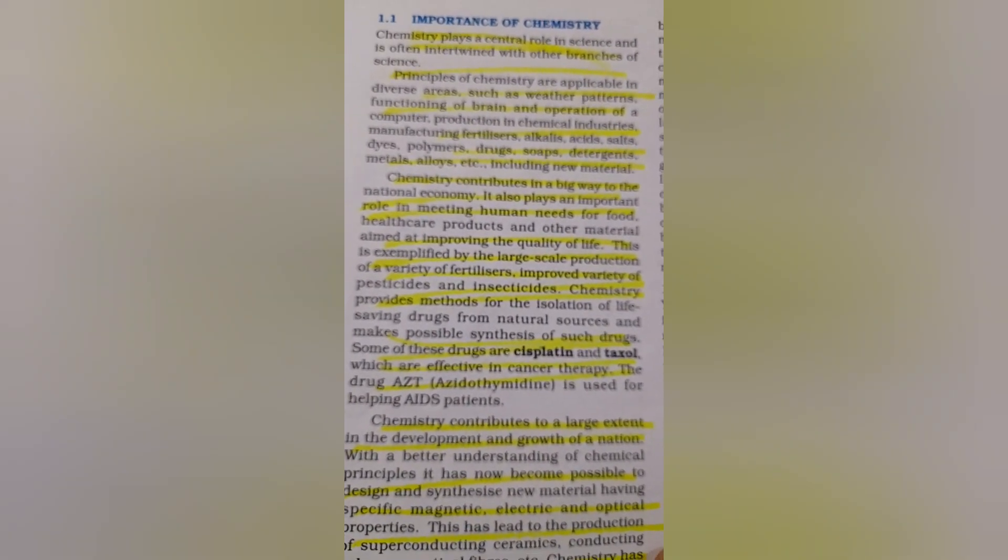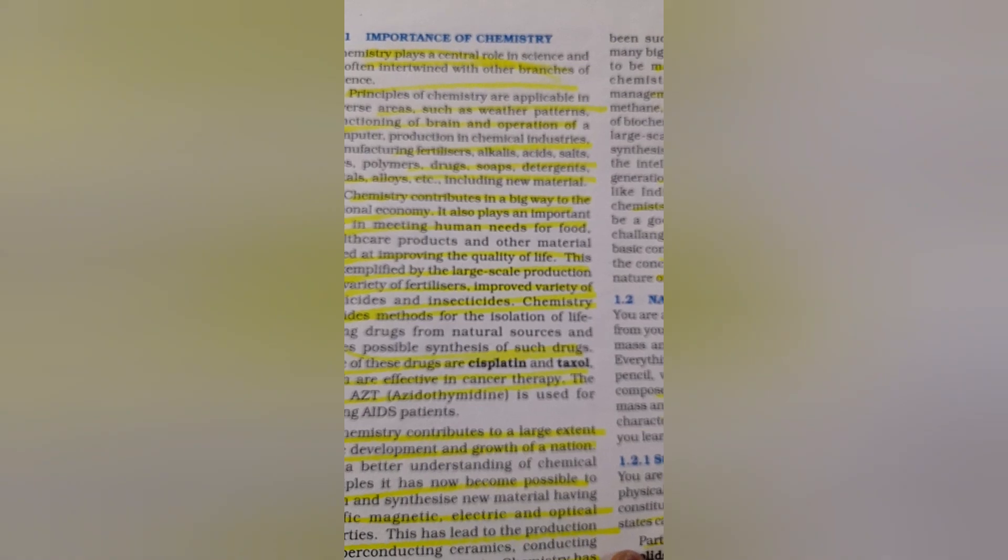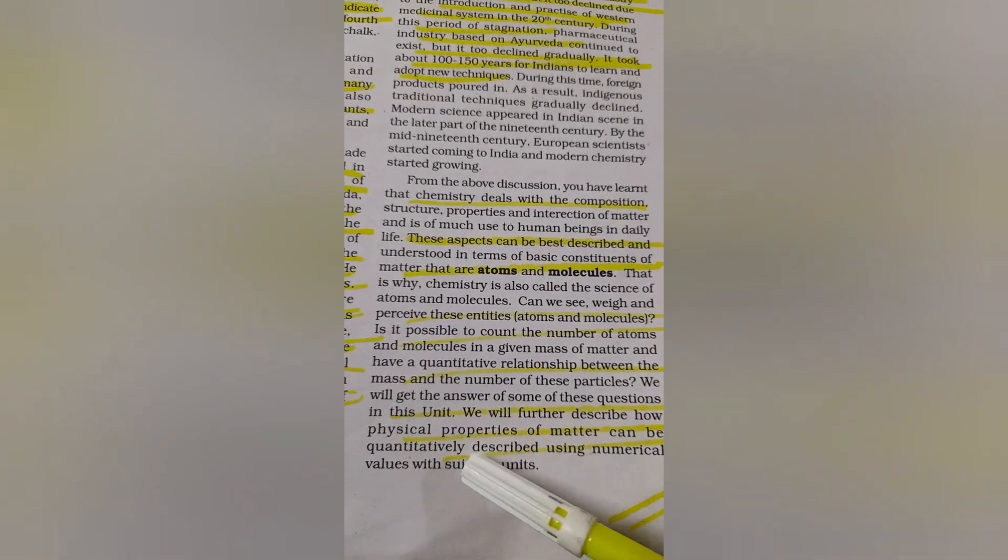Hello dear students, welcome everyone to another session of Amazing World of Science, where we upload NCERT line-to-line chapters from classes 8 to 12. Today we are going to continue with the Chemistry Part 1 textbook for Class 11. We had started the first chapter, 'Some Basic Concepts of Chemistry,' and in the previous session we finished up to atoms and molecules. Now we are supposed to explain how physical properties of matter can be quantitatively described. But first, let us look at the importance of chemistry.